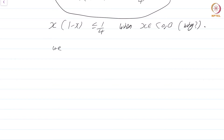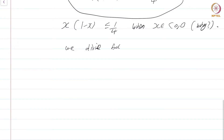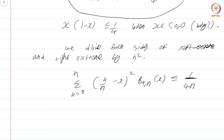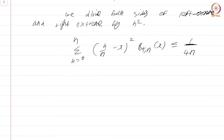Now that we have established Σ_{k=0}^{n} (k − nx)²·b_{kn}(x) ≤ n/4, we divide both sides by n² to obtain Σ_{k=0}^{n} (k/n − x)²·b_{kn}(x) ≤ 1/(4n). So we have established this key estimate: even summing over all k, the weighted sum of (k/n − x)² against the Bernstein basis is at most 1/(4n).